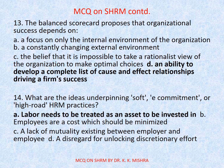Question number 13. The balanced scorecard proposes that organizational success depends on — Options are A. A focus on only the internal environment of the organization. B. A constantly changing external environment. C. The belief that it is impossible to take a rationalist view of the organization to make optimal choices. D. An ability to develop a complete list of cause and effect relationships driving a firm's success. Correct option is D. The balanced scorecard, normally known as BSC, was given by Kaplan and others.